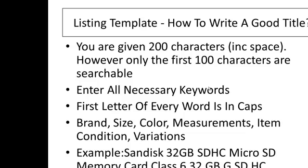The reason you do this is because customers search for products in different ways. For example, someone looking for a DVD of Desperate Housewives Season 5 might type 'Season 5' or they might type out 'FIVE.' Remember to put in all the different keyword variations to include all customers.